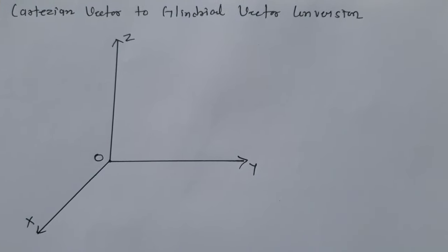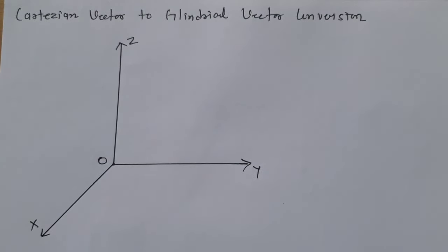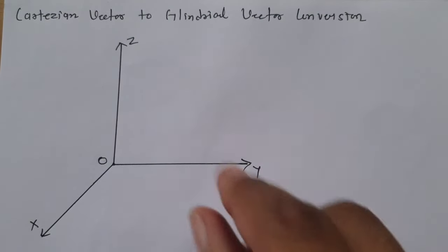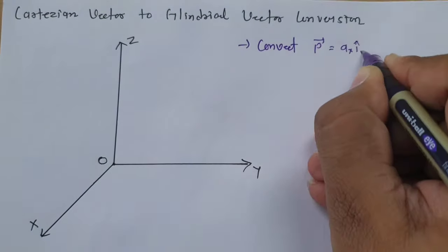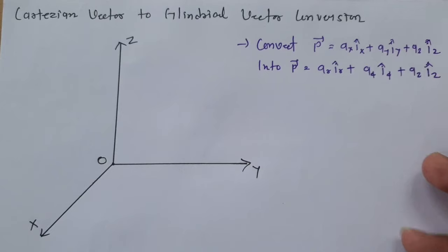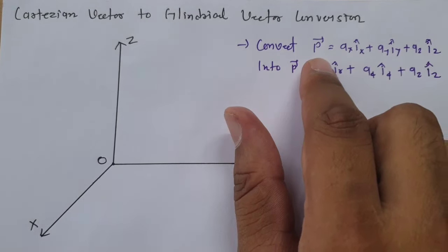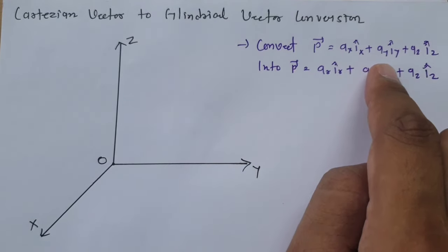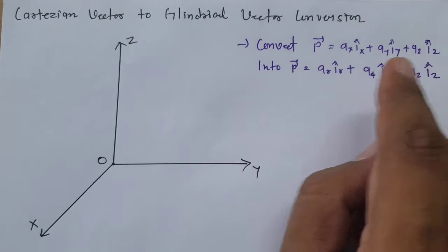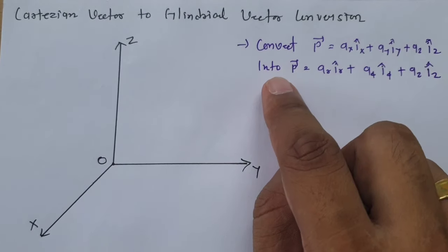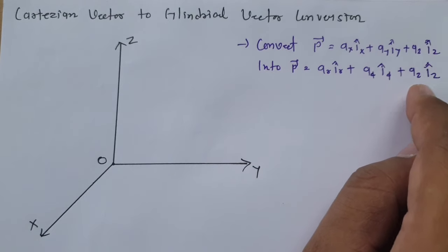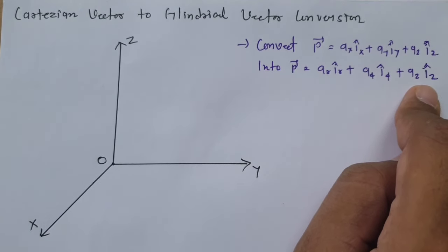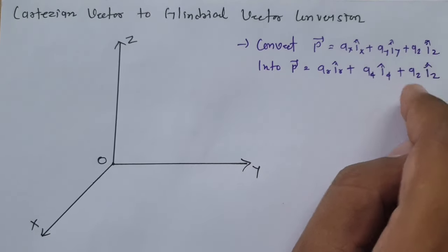In this session we will see Cartesian Vector to Cylindrical Vector Conversion. We have been given vector P that is AX·IX plus AY·IY plus AZ·IZ, and we are going to convert this into AR·IR plus Aφ·Iφ plus AZ·IZ. So how do we convert this?